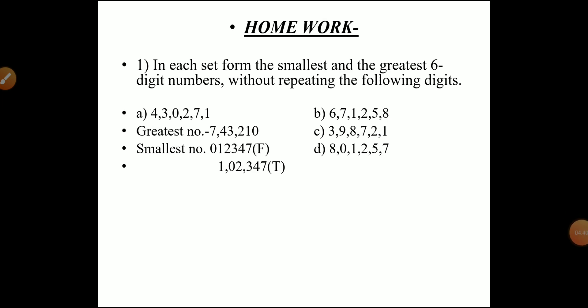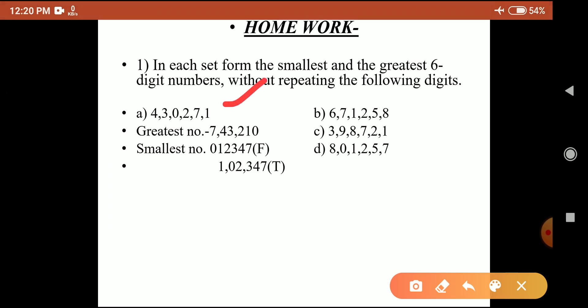Now it's time for homework. Question 1: In each set, form the smallest and greatest six-digit number without repeating the given digits. The first question has been done for you. There are six random digits. The greatest number is formed by arranging digits from higher to lower order — that is, in descending order.